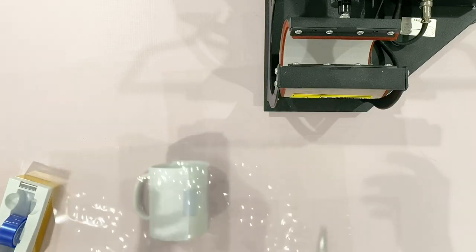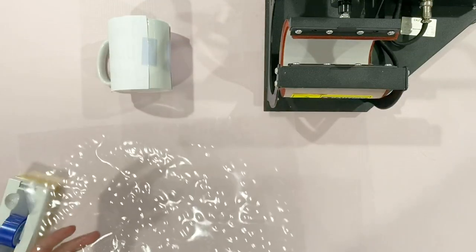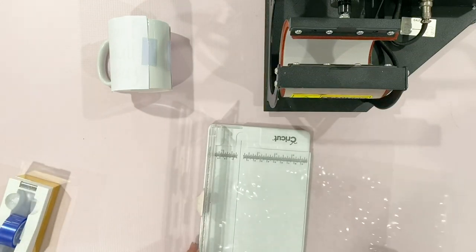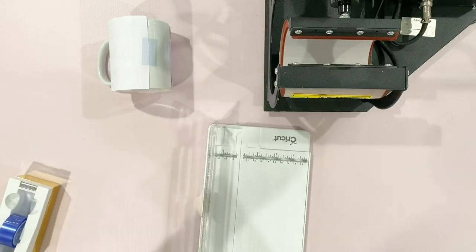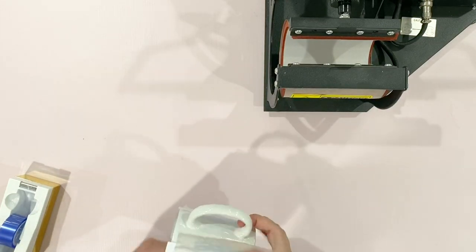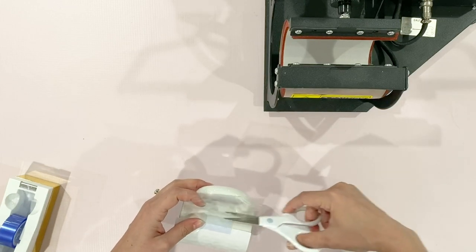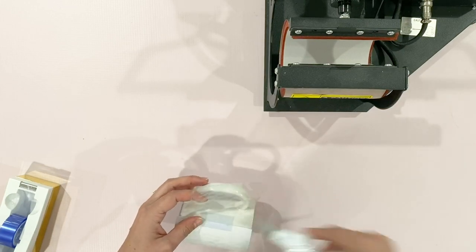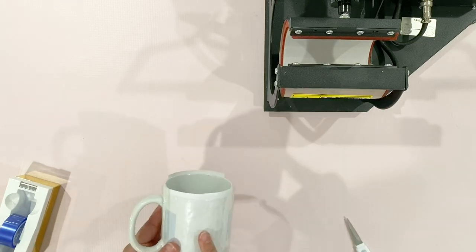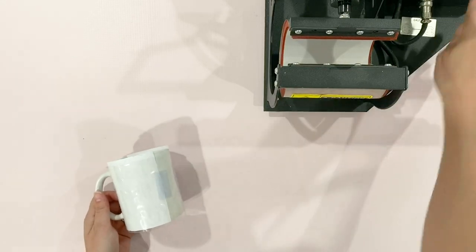Once you have everything lined up how you like it, we're going to do one more step before we put it into our mug press. This stuff here is an old liner for heat transfer vinyl, but you can also buy heat transfer masks. And it's exactly the same thing. So I'm just going to cut down a piece to be three and a half inches long. The reason I'm wrapping this around is because I don't want my image to bleed through and get onto my mug press. This is optional. You can also wrap it with another piece of paper.